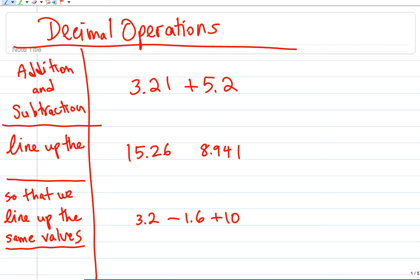The key when adding decimals, this key is for adding and subtracting decimals, is just like adding and subtracting fractions. We have to line up the values, which means they need to be the same size parts. We have to line up the place values.